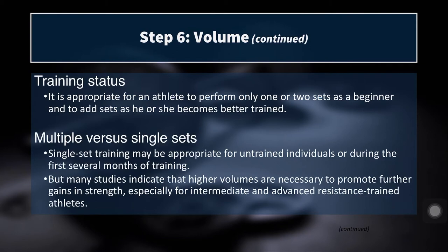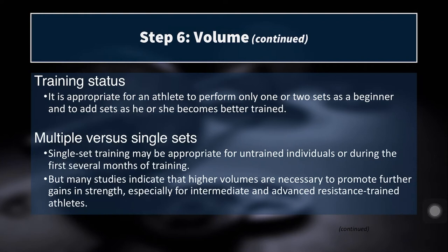Training status influences the amount of volume you can use. It's appropriate for beginners to perform only a couple of sets, but as the athlete becomes more trained, sets increase progressively. Some advanced athletes in volume phases training for muscle gain will come in the morning and do back squats, straight-leg deadlifts, and clean pulls — three intense lower body lifts for five sets of ten — then return in the evening and repeat the same thing for another five sets of ten. That's a huge volume on the lower body for athletes nearing their genetic potential without anabolic steroids, where continuing to increase volume is key.